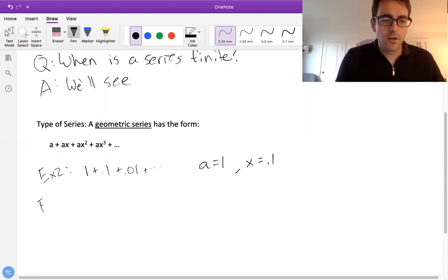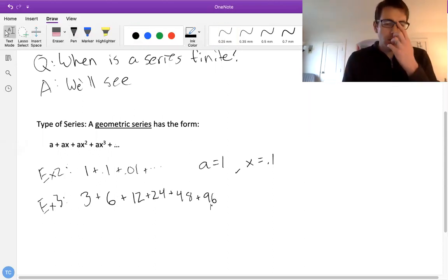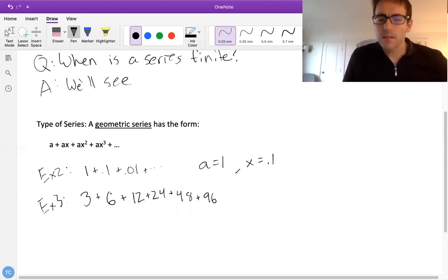Just for a little bit more, another example would be something like 3 plus 6 plus 12 plus 24 plus 48 plus 96. And so looking at this, we might want to guess at what the pattern is. We can ask ourselves how do we get from 3 to 6 and then how do we get from 6 to 12, etc.